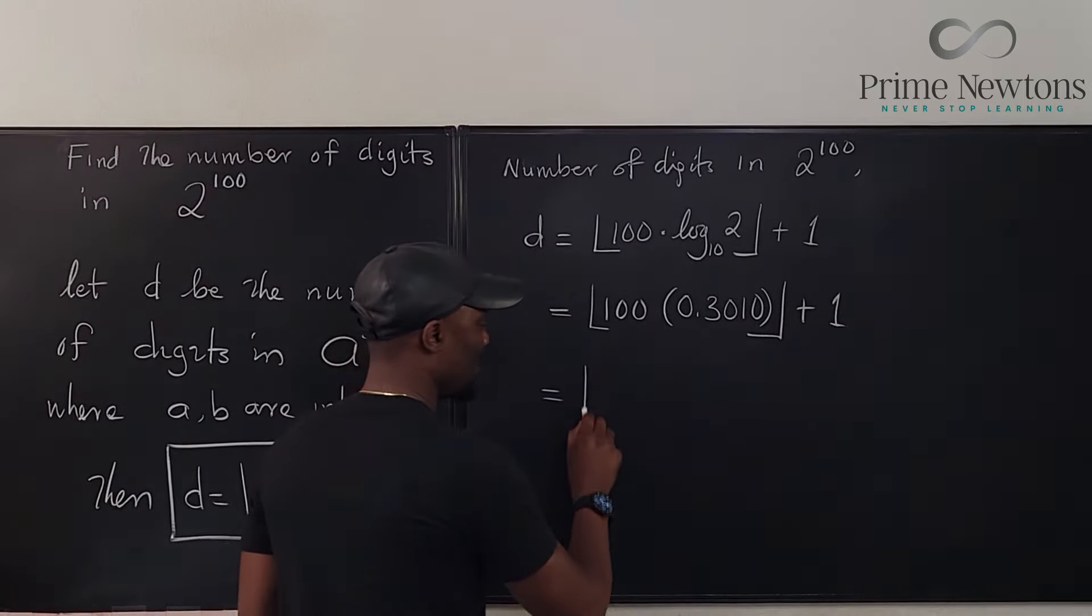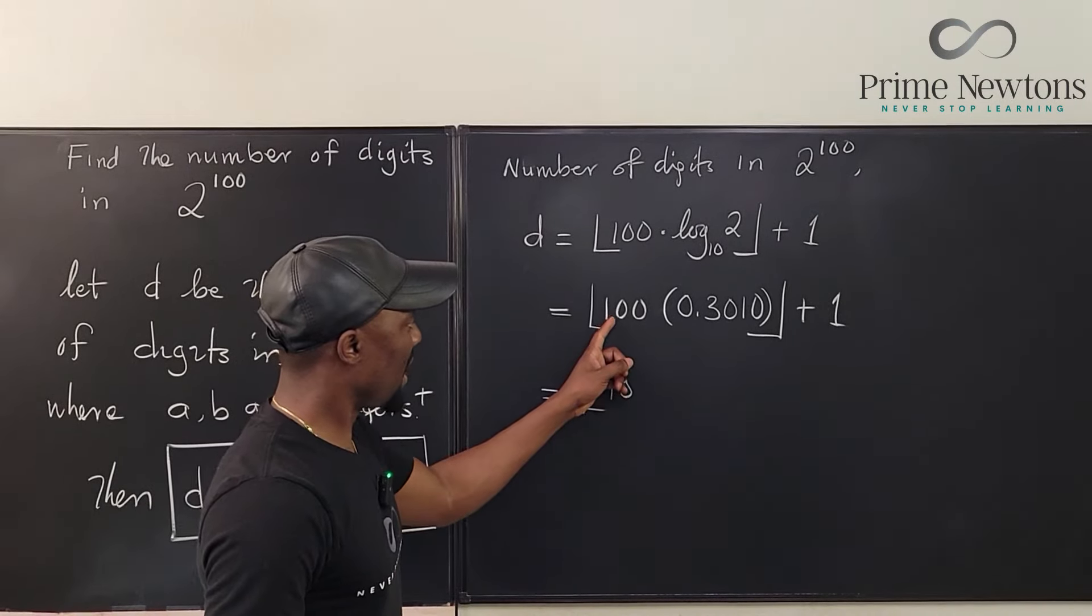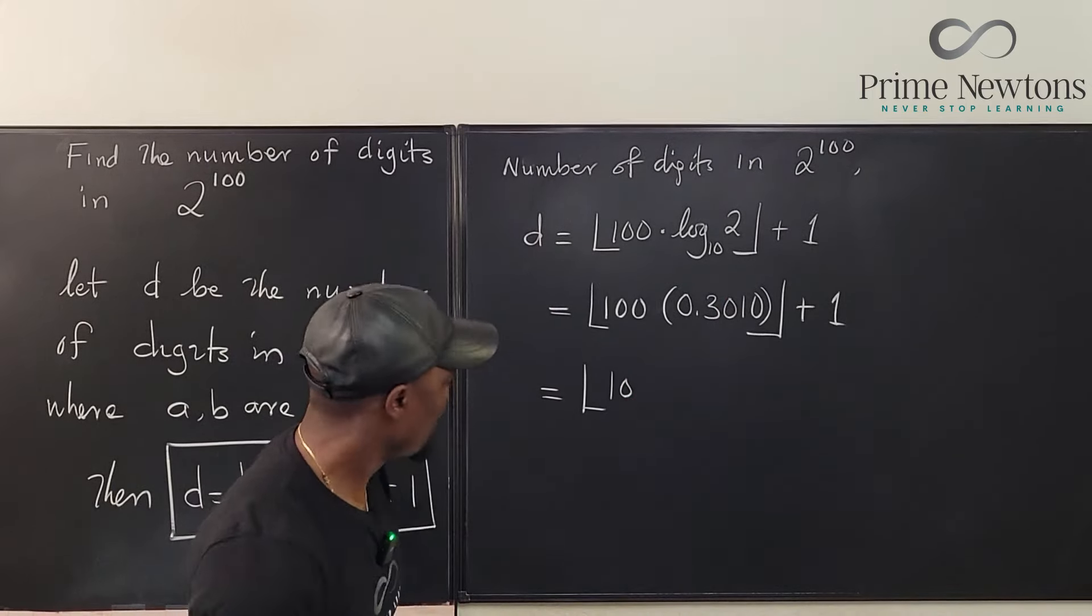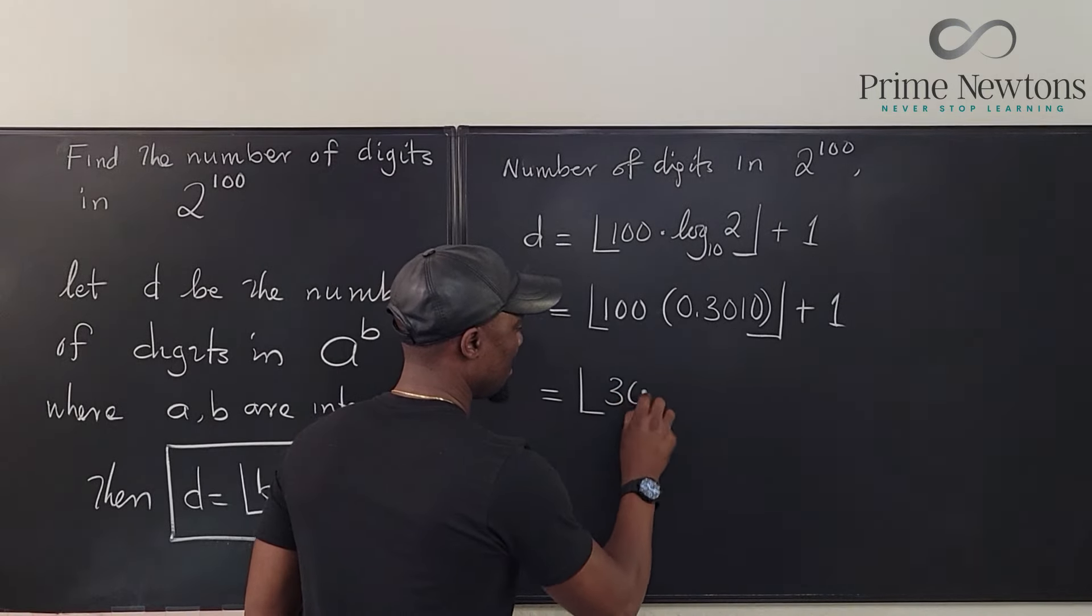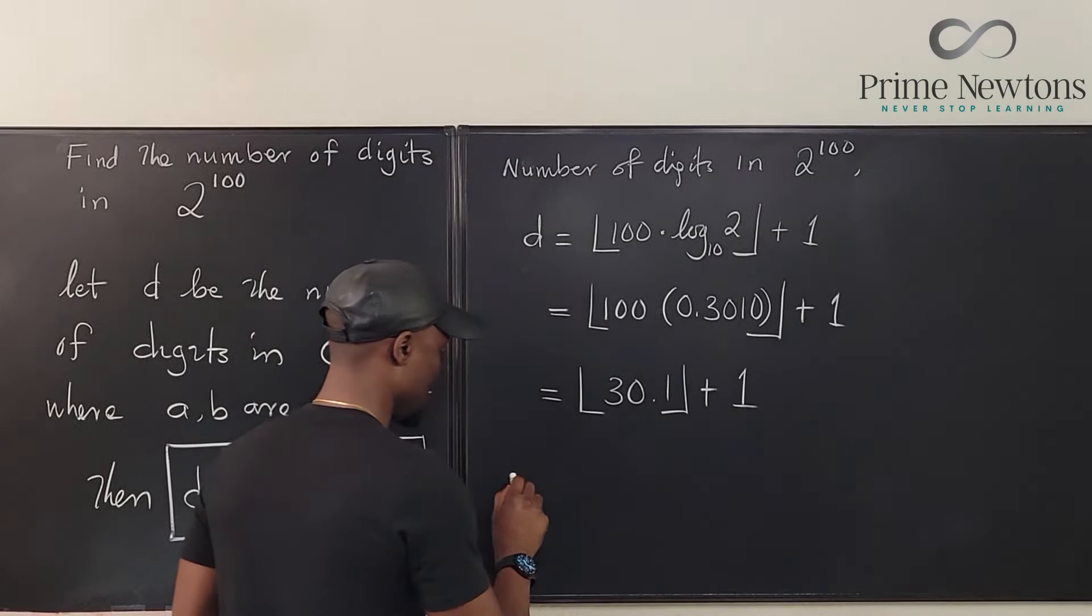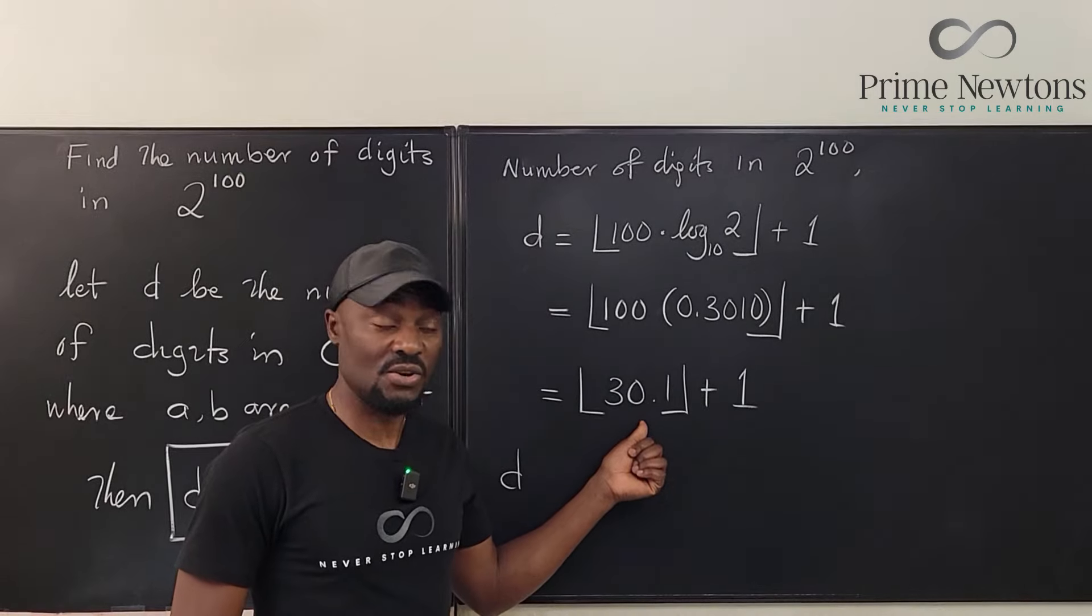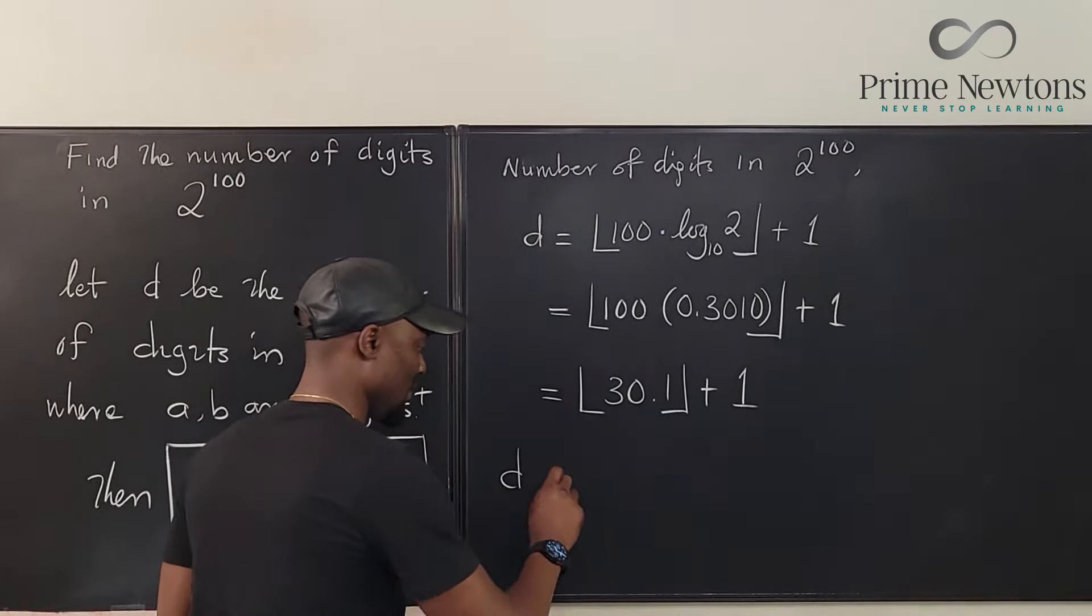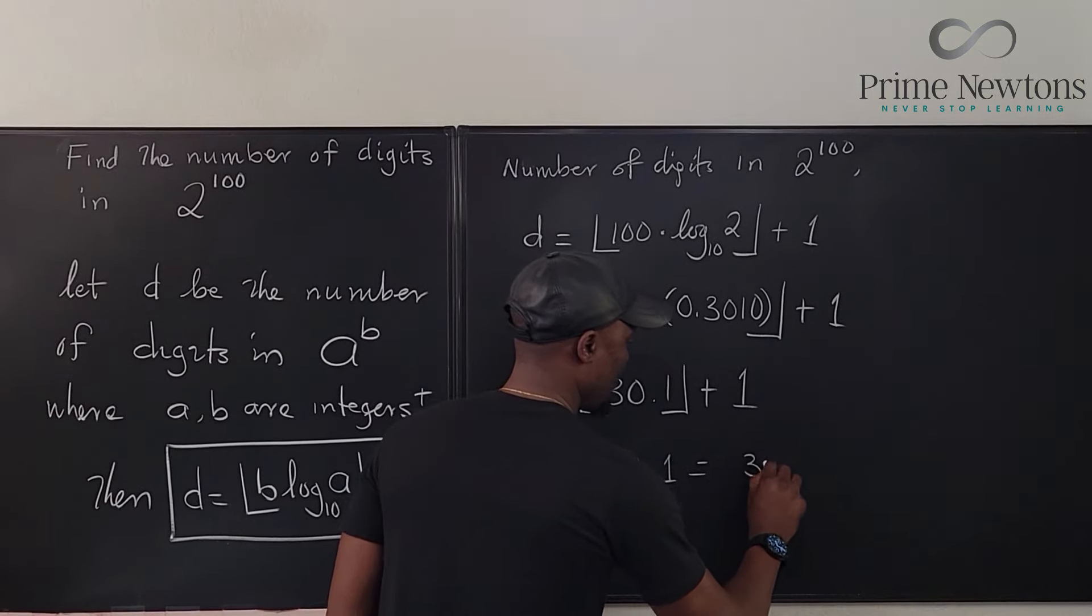This is equal to the floor of 100. Or if we multiply this, multiply 100 by this, you move the decimal point twice. So that's 30.1. So it is the floor of 30.1 plus 1. So D, what is the floor of 30.1? Remember, it is the largest integer less than or equal to 30.1. And the number is 30. So this is equal to 30 plus 1, which is equal to 31.